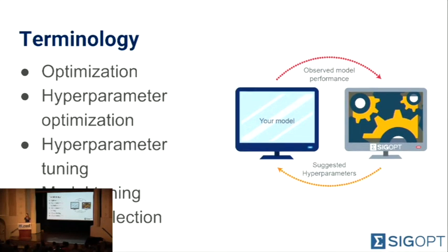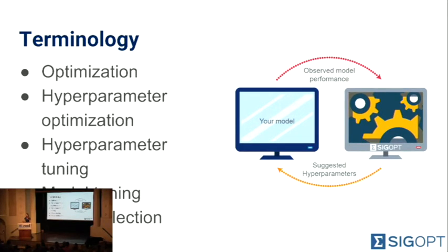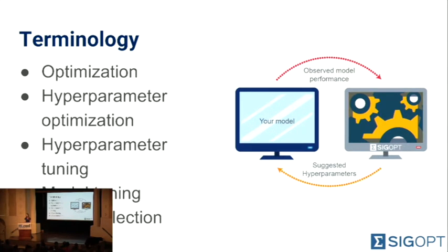First, I'd like to get us all on the same page with what we mean when we say hyperparameter optimization. This concept goes under many different names — optimization and tuning are some of the most common. Model selection is a related term. In general, what we're doing is the search for the best values of hyperparameters for our model. It's this iterative process by which we try out a set of configuration values — a model architecture and learning rate, the number of trees in a random forest — evaluate our model, record performance for that configuration, then repeat.